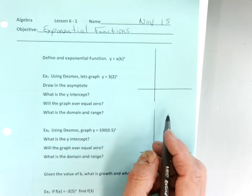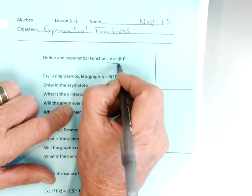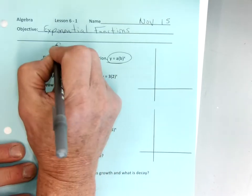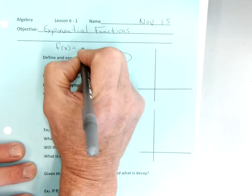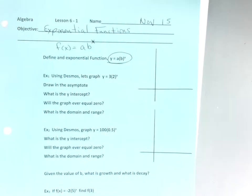Define and talk about the exponential function. We start with this formula: f(x) equals a times b to the x. For us, f(x) and y are the same thing. When you see f(x), just think y. The only reason we use f(x) is because this will be a function — it will pass that one-to-one test.